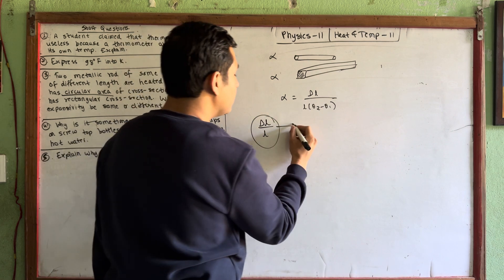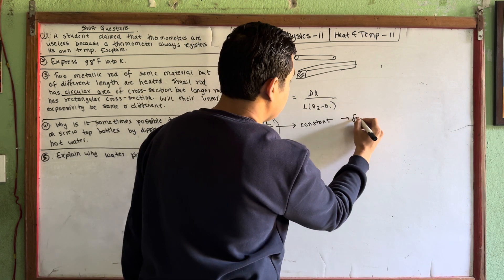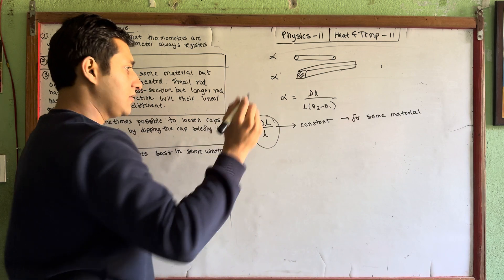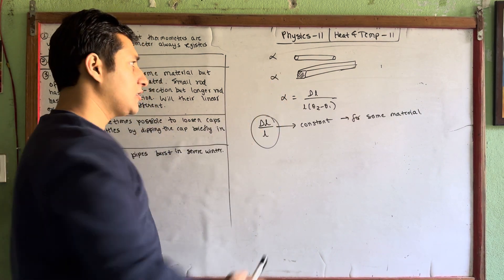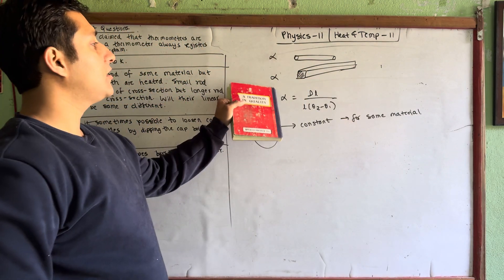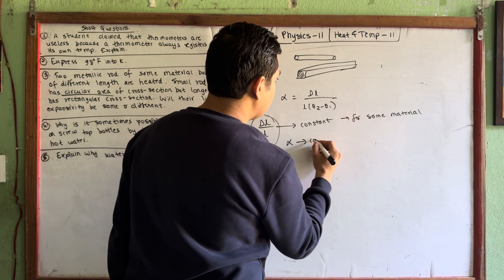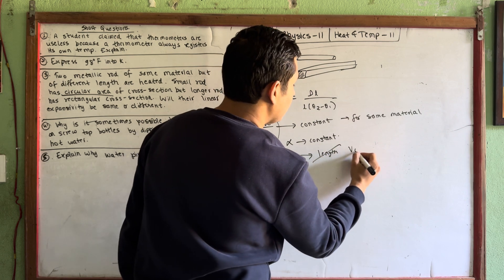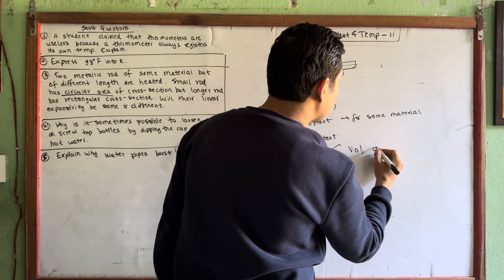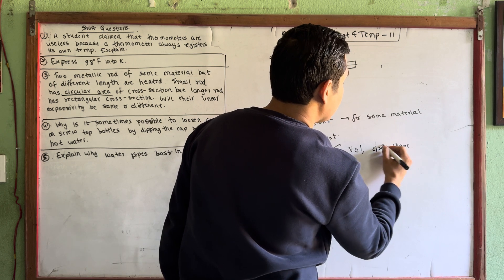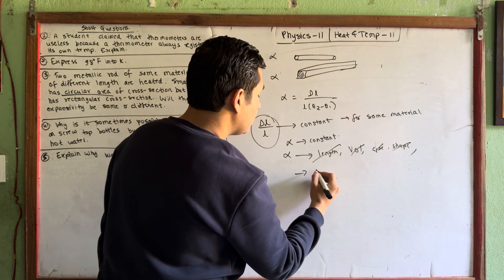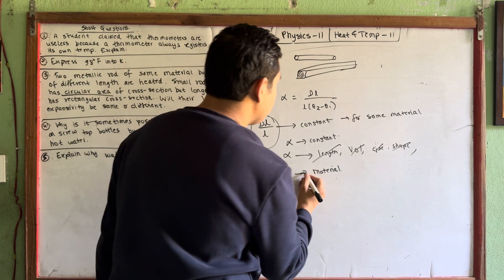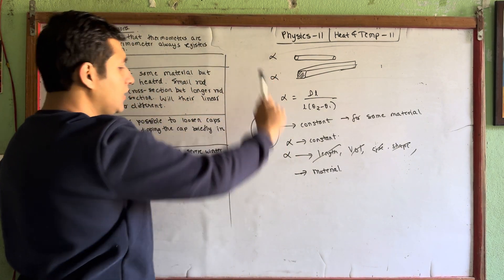The coefficient of linear expansion, alpha, is constant for the same material. This material is constant. The length, shape, and size may be different, but the alpha value remains constant. So the alpha value is the same for both rods since they are made of the same material.